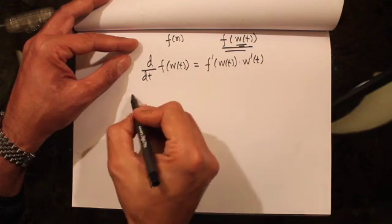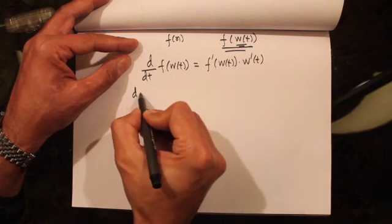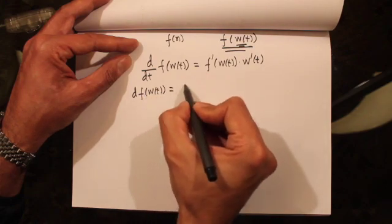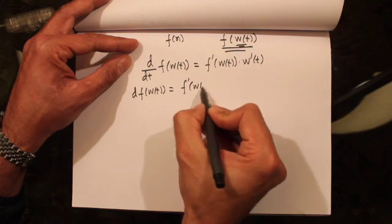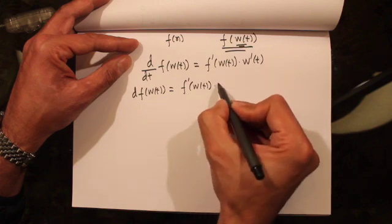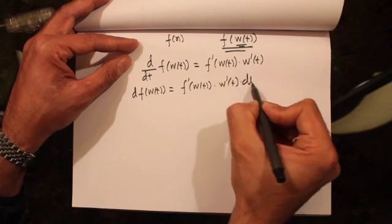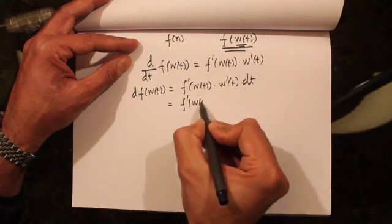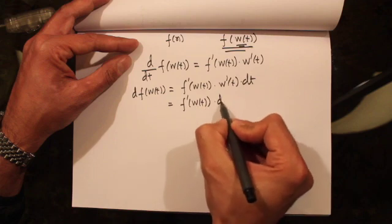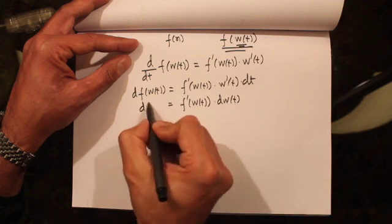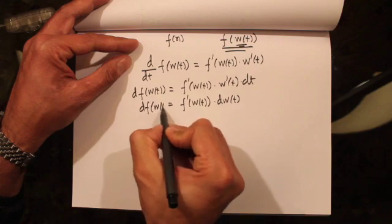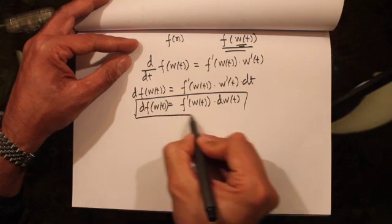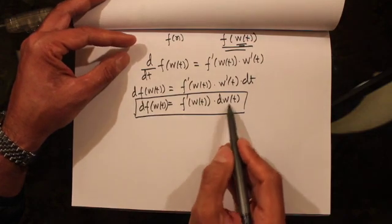In differential notation, I can rewrite this as df(w(t)) is equal to f'(w(t)) w'(t) dt, or this can be written as f'(w(t)) dw(t). So this is what we're going to get if w(t) was a differentiable function.